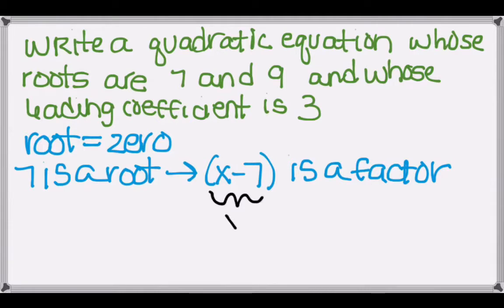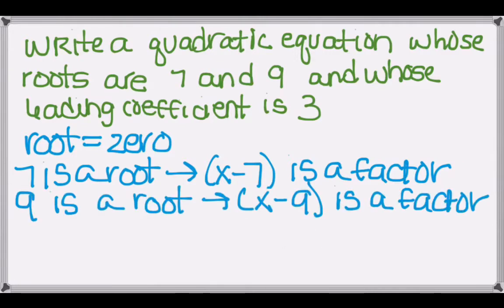And that's because if you wanted to set x minus 7 equal to 0, to find the zero, to solve it you'd add 7 to both sides, and you'd come up with the zero, or the root, of x is equal to 7.